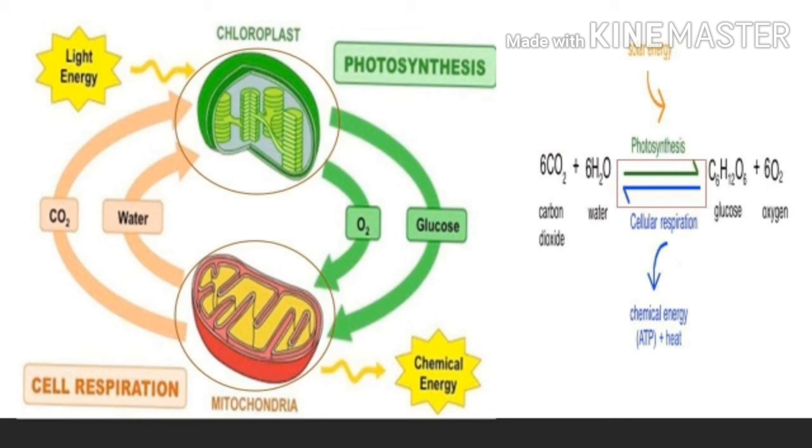In summary, photosynthesis takes carbon dioxide and water plus sunlight to create oxygen and sugar, which is exactly what cellular respiration needs. Cellular respiration takes the sugar and oxygen to create carbon dioxide and water plus ATP, which helps in photosynthesis. This cycle repeats over and over again.